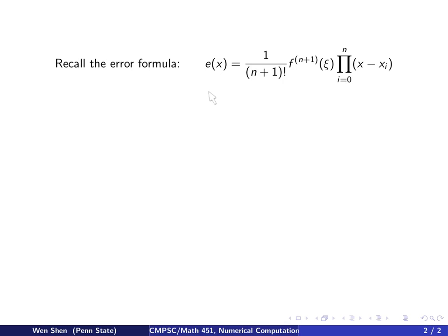The error theorem says error equals 1 over (n+1) factorial, f to the (n+1) derivative evaluated at some ξ times the product of all these (n+1) terms, which are (x - x_i) for i from 0 to n.